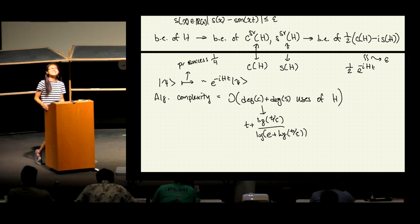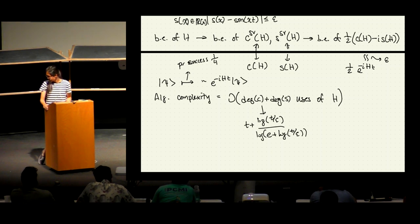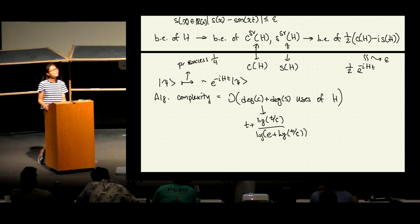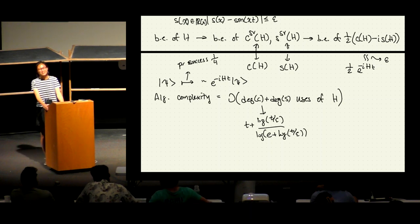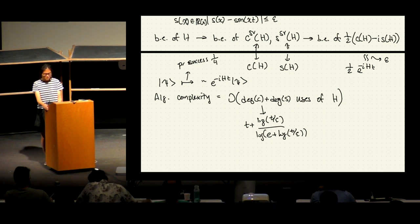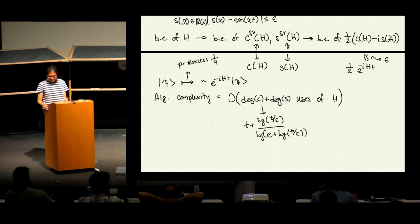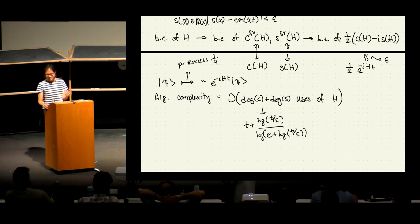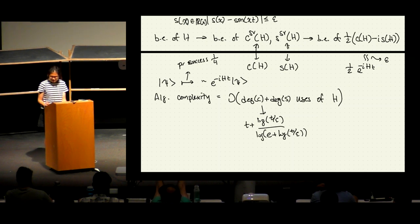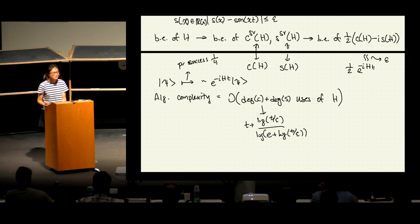Audience question on lower bounds: there's a lower bound of t from the no-fast-forwarding theorem, and a log(1/ε)/log log(1/ε) term from a correspondence between discrete and continuous query models. The precise lower bound is from the paper on exponential improvement for simulating sparse Hamiltonians. The exact runtime is called R(t, ε) and involves something related to Lambert W functions.